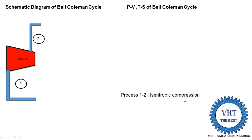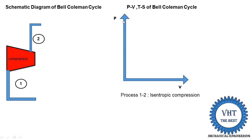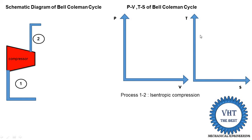During the isentropic compression process, entropy remains constant while pressure is increased, volume is reduced, and temperature is also increased. On the PV diagram, the y-axis is pressure P and the x-axis is volume V. On the TS diagram, the x-axis is entropy S and the y-axis is temperature T. When moving upward, pressure or temperature increases; when moving right, volume or entropy increases.